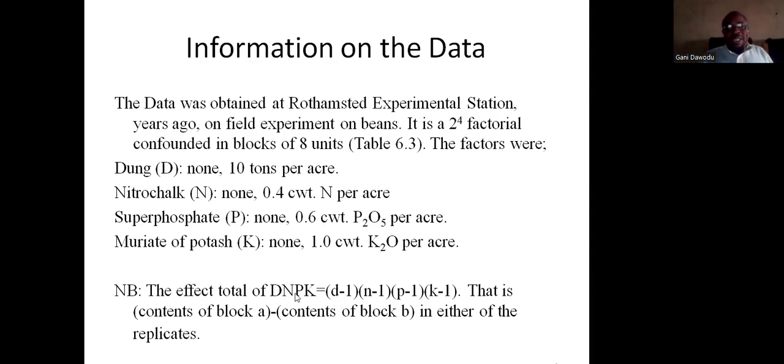The effect total, DNPK, which you will express in the algebra as (D minus 1)(N minus 1)(P minus 1)(K minus 1), that is the content of block A minus content of block B. In the data, you will soon see that in either of the replicates. Now, if I do this expansion, if I carry out this expansion, it will give me the main effects and the numerous interactions that are possible in DNPK. Some of them will carry the positive sign. The other half will carry the negative sign.